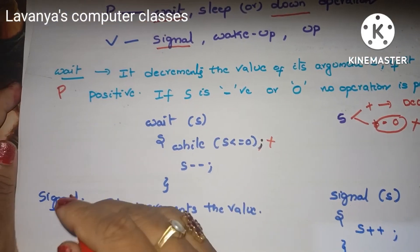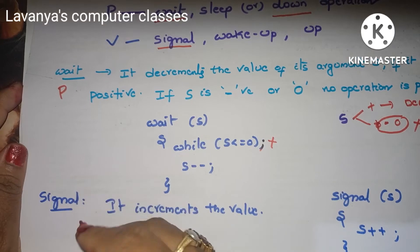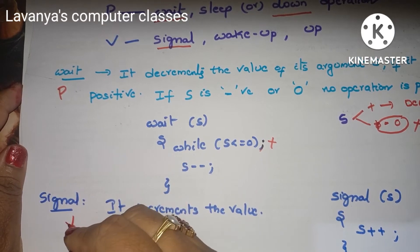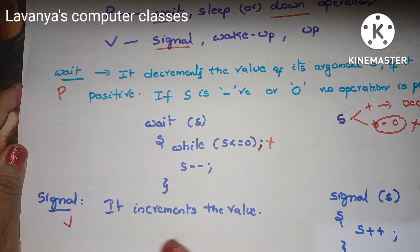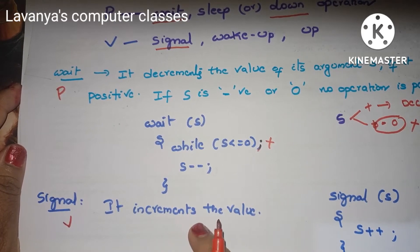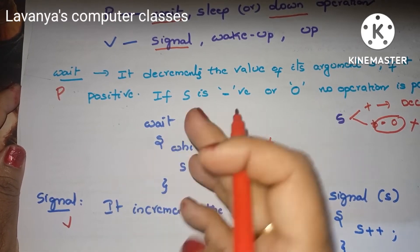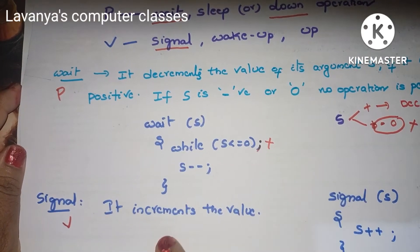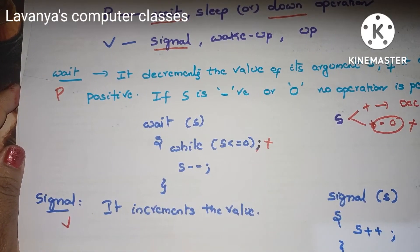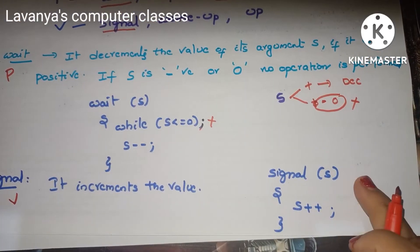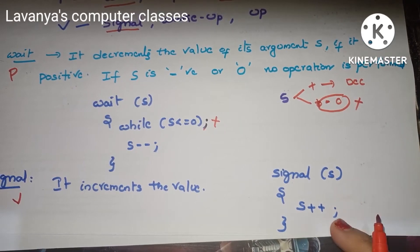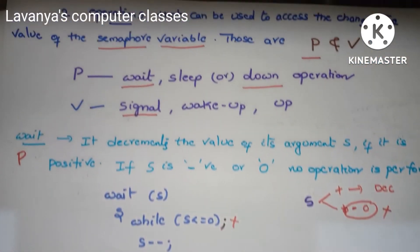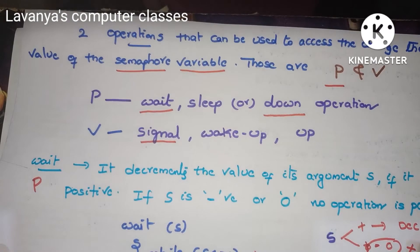The signal operation, also called V, wake up, or up, increments the value. The code is: signal(S) — S dot value equals S dot value plus 1. Opposite of wait which decrements, signal operation increments. These are the two operations.